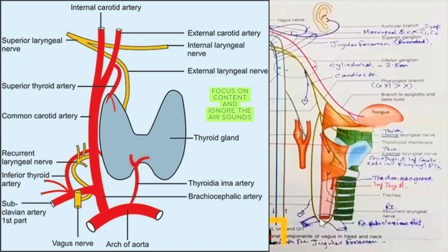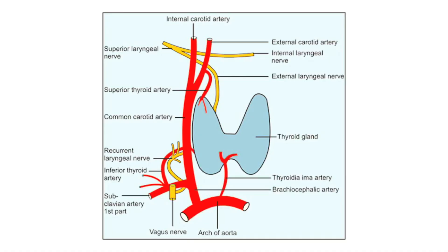In the case of the recurrent laryngeal nerve, the inferior thyroid artery is in very close approximation with the recurrent laryngeal nerve near the gland. During thyroidectomy, there are high chances of injuring or ligating the recurrent laryngeal nerve. Therefore, the inferior thyroid artery is ligated away from the gland.